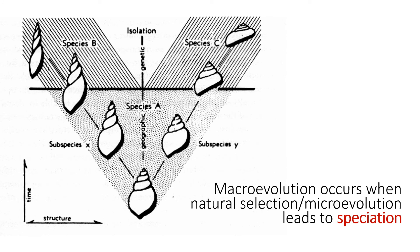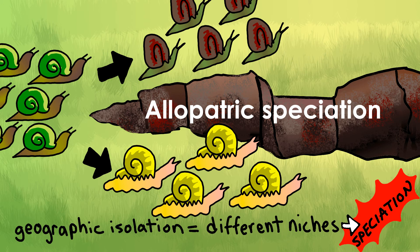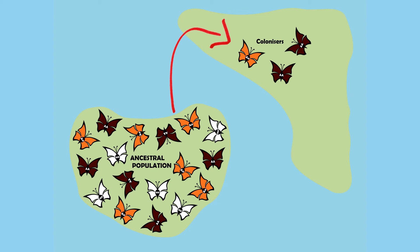Given time, natural selection and other types of microevolution lead to macroevolution and speciation — the origin of new species. Speciation can occur under a variety of conditions, but the most common mode is allopatric speciation, in which a new species is produced when a single population splits in two and the new populations continue to evolve in isolation. This often occurs when new populations are established on islands, where founder effects and genetic drift may contribute.